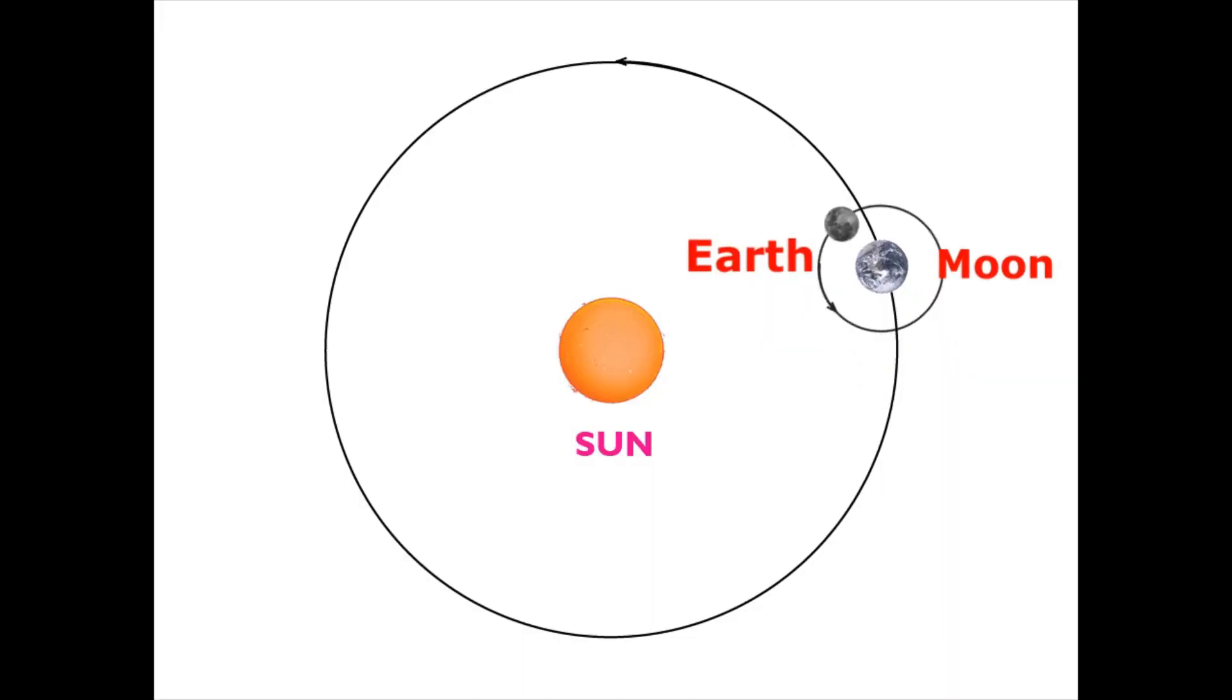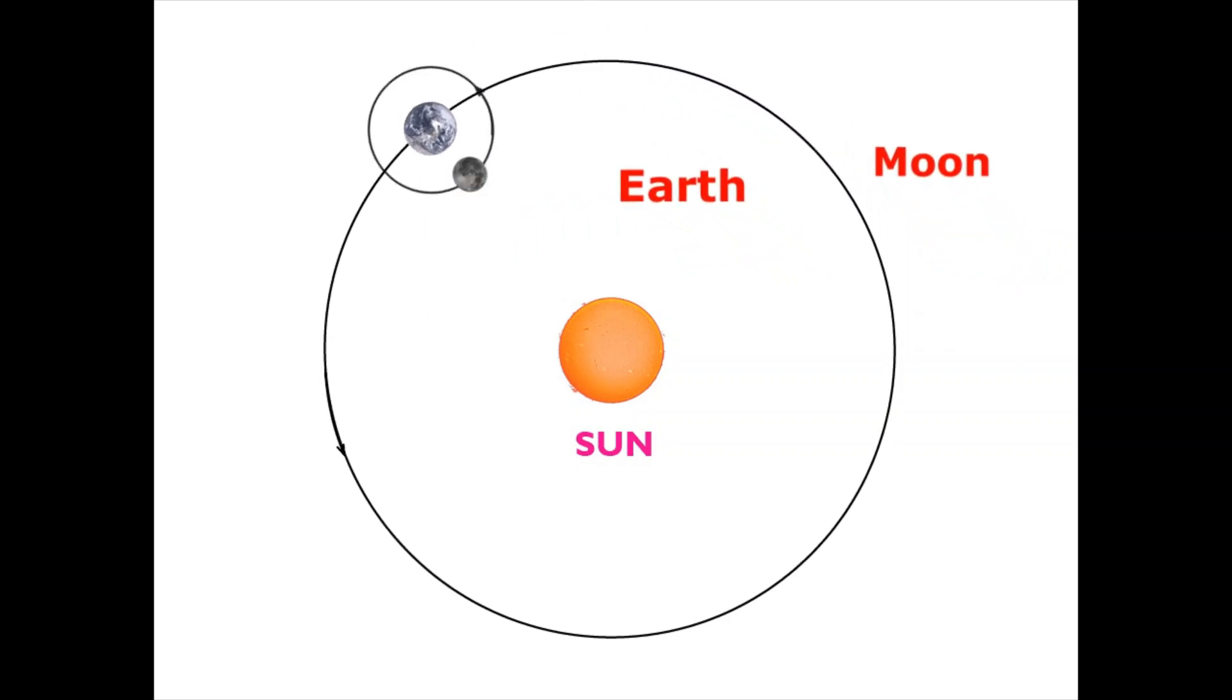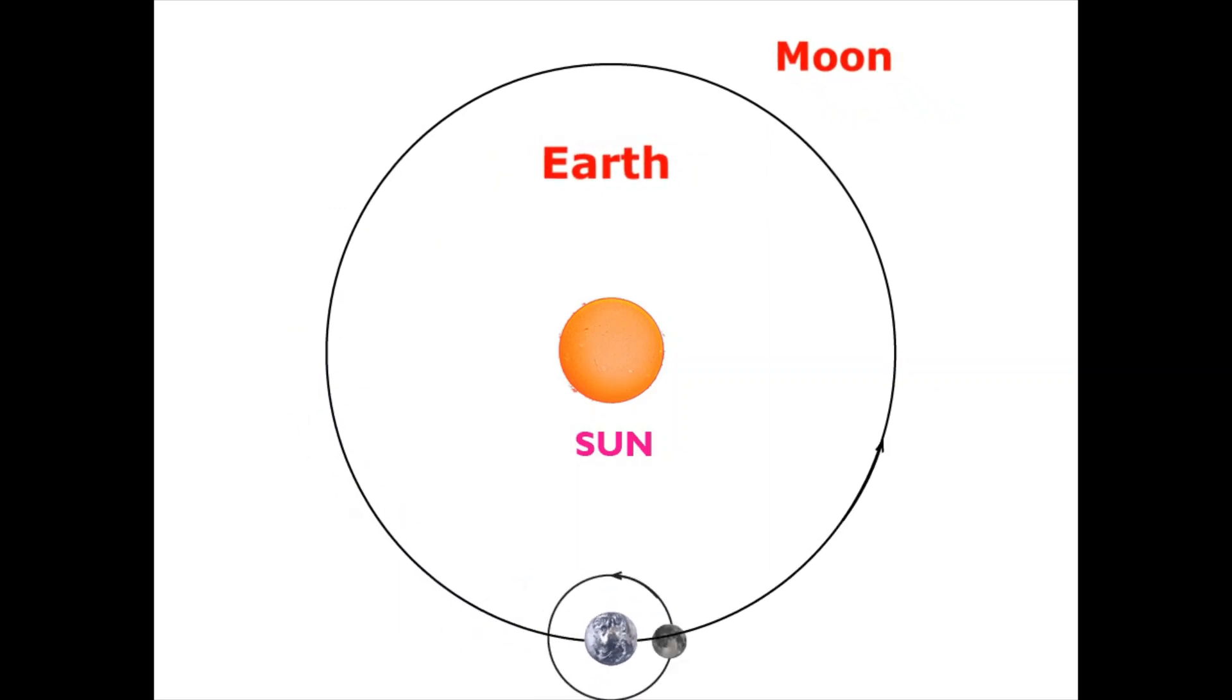The Moon orbits the Earth in the same direction as the Earth orbits the Sun. It is the anticlockwise direction viewed from the north of the Solar System.